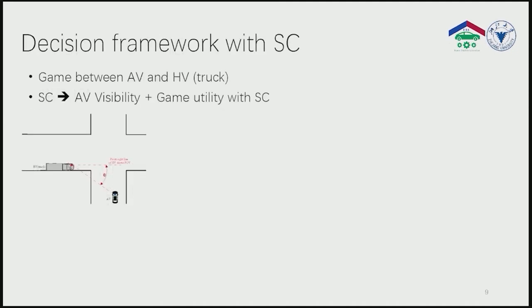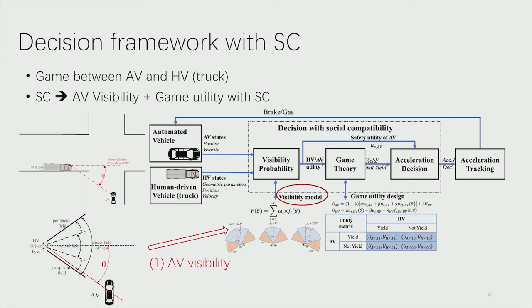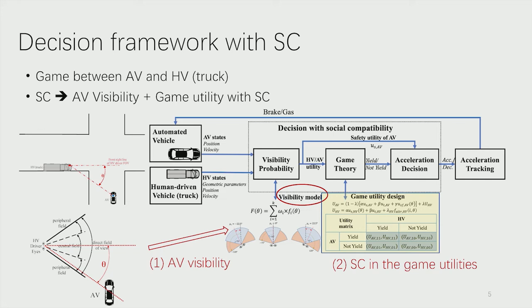As for the decision framework, we use game theory as illustrated in this figure. The social compatibility in driving interactions is embodied in two aspects. Number one is the AV visibility from the perspective of the interacting truck driver. Based on the sensing data, a visibility probability model is adopted to estimate the truck driver's visual characteristics, which outputs the probability of AV being observed by the human driver. Number two, social compatibility is further incorporated in the decision game between AV and the human-driven vehicle. The algorithm will output a decision of acceleration or deceleration for the lower-level tracking controller.